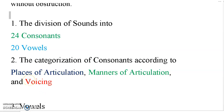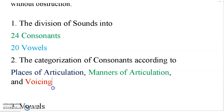Number three is voicing. Voicing means the sound is voiced or voiceless — that is, whether the vocal tracts cause vibration while producing the sound or not. For example, /f/ is voiceless while /v/ is voiced. This is the difference between voiced and voiceless consonants.